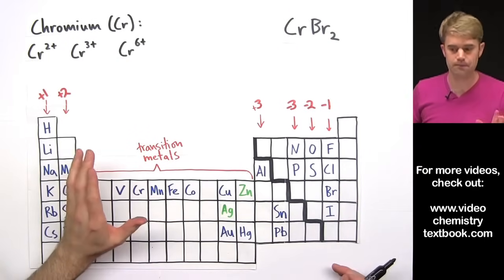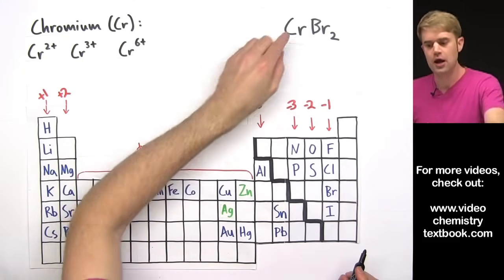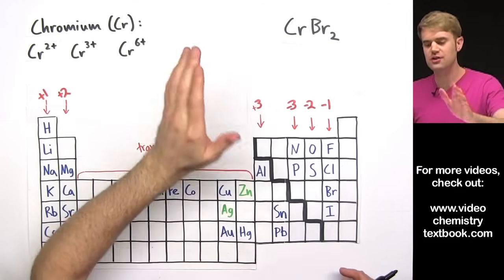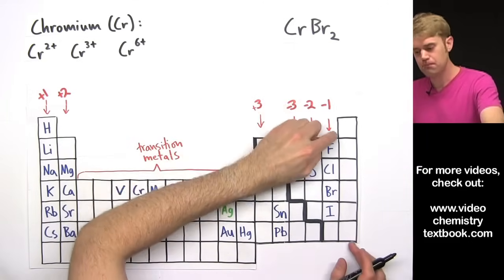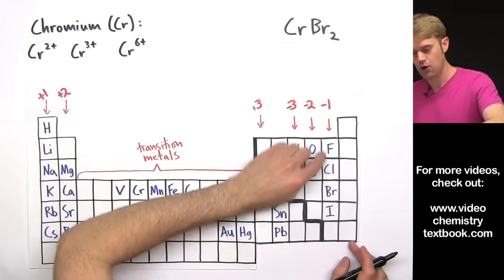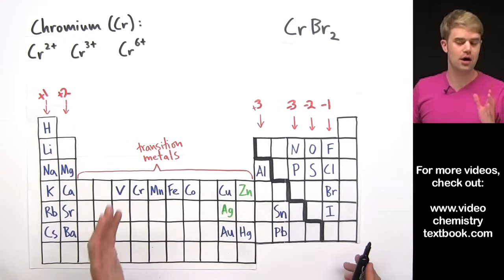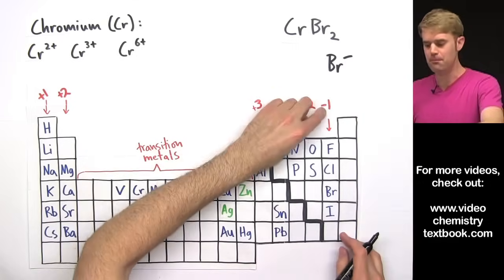The first thing we're going to do is focus in on the ion with a definite charge, the ion that can only have one charge that doesn't change. And here, that's Br. Br is in this column, this 1- column, which means that in an ionic compound, Br always has a charge of 1-.